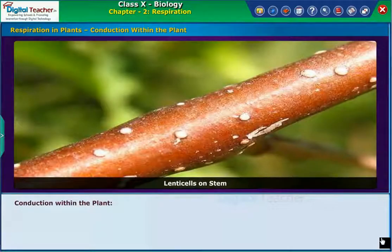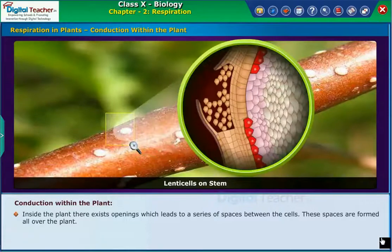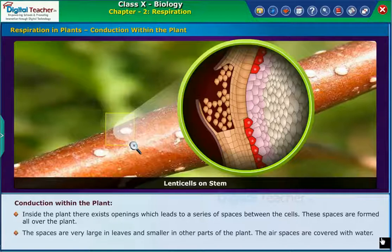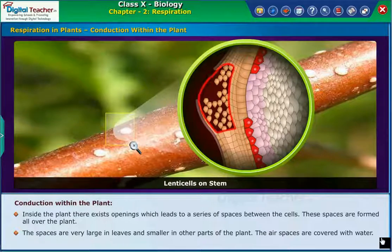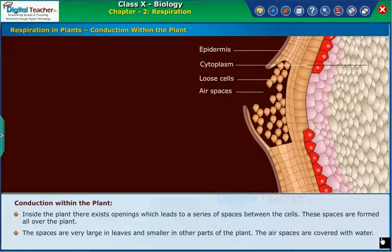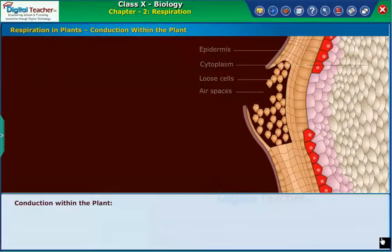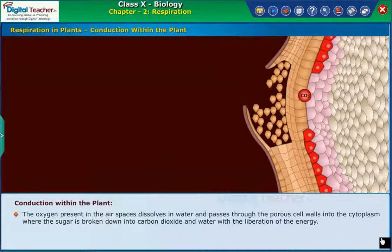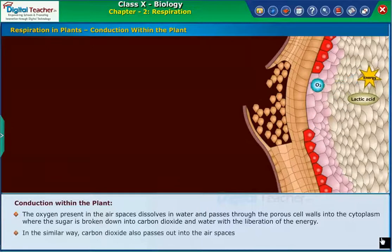Let us learn about conduction within the plant. Inside the plant, there exist openings which lead to a series of spaces between the cells. These spaces are formed all over the plant — very large in leaves and smaller in other parts. The air spaces are covered with water. The oxygen present in the air spaces dissolves in water and passes through the porous cell walls into the cytoplasm, where the sugar is broken down into carbon dioxide and water with the liberation of energy. In a similar way, carbon dioxide also passes out into the air spaces.